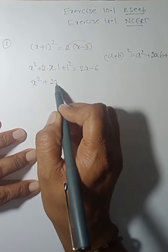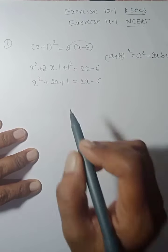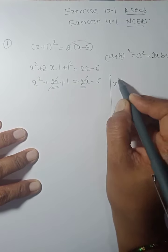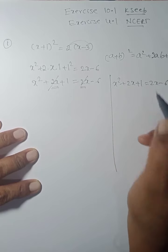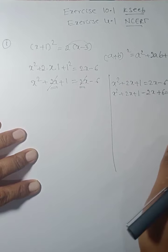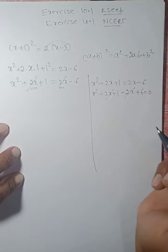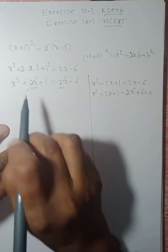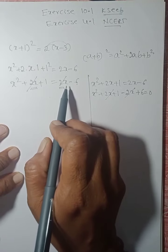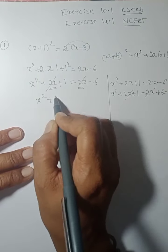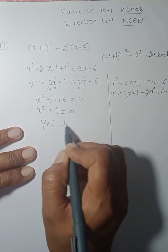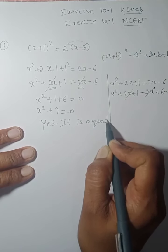We have x² + 2x + 1 = 2x - 6. Notice that 2x appears on both sides — it cancels out. Transferring terms: x² + 2x + 1 - 2x + 6 = 0. After the like terms cancel, what remains is x² + 1 + 6 = 0, which gives x² + 7 = 0. This is a quadratic equation.